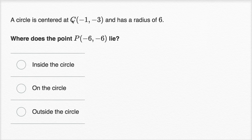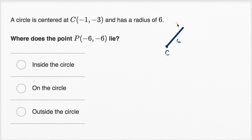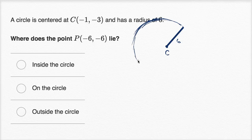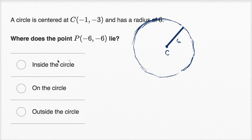The key realization here is just what a circle is all about. If we have the point C, which is the center of a circle with radius six, the circle is a set of all points that are exactly six units away from that center. So if P is less than six units away, it's going to be inside the circle. If it's exactly six units away, it's on the circle. And if it's more than six units away, it's outside the circle.